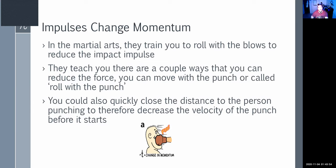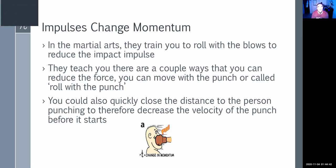There are a few ways to reduce force from a punch. You can roll with the punch — as the punch strikes you, you move with it, increasing the time it contacts you and decreasing the force. Or you can close the distance to decrease the velocity coming at you. Martial artists keep their wind-ups short and quick to generate force with little motion so you can't dodge, while rolling with a punch when you see it coming can meaningfully reduce the impact.